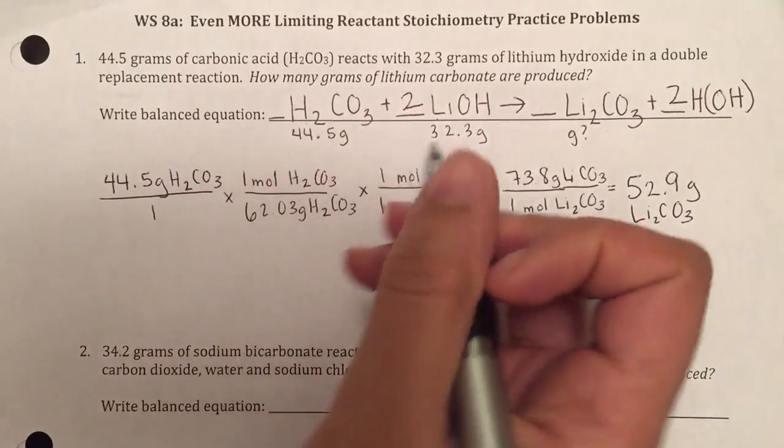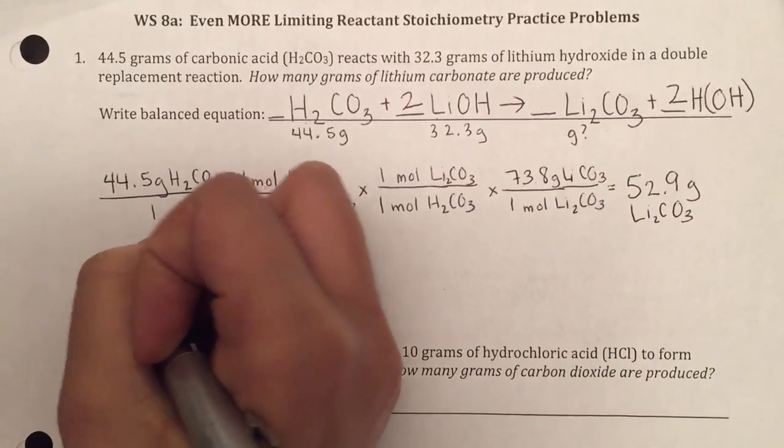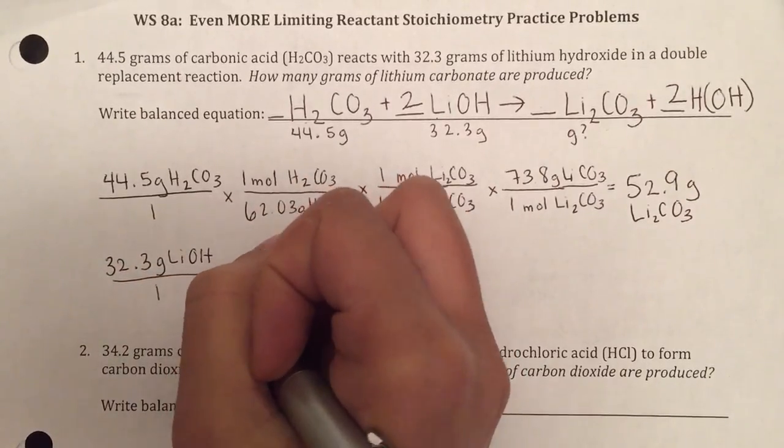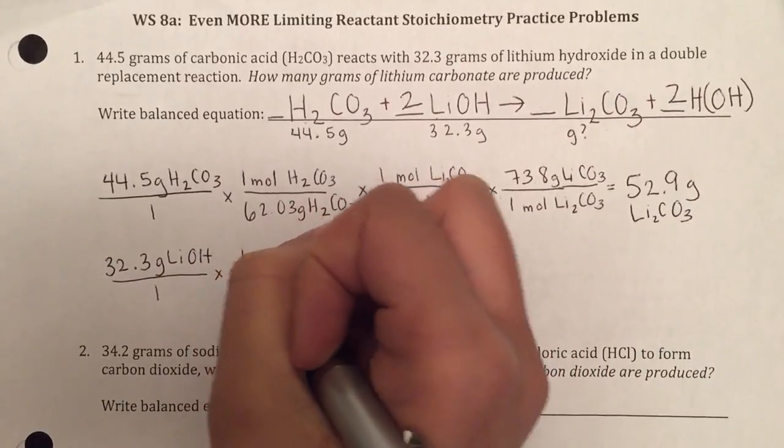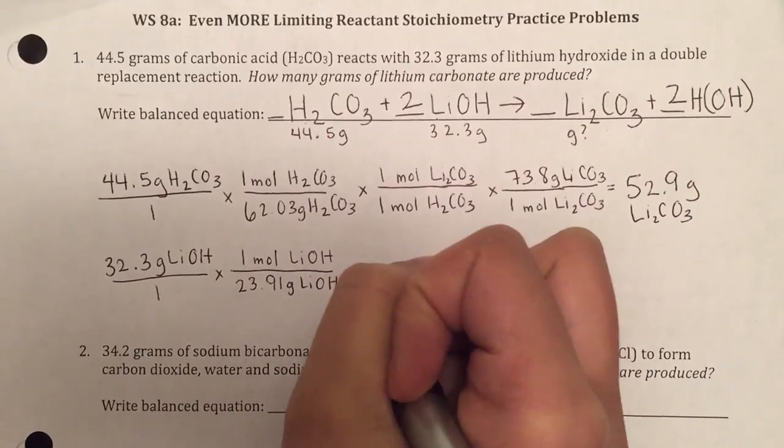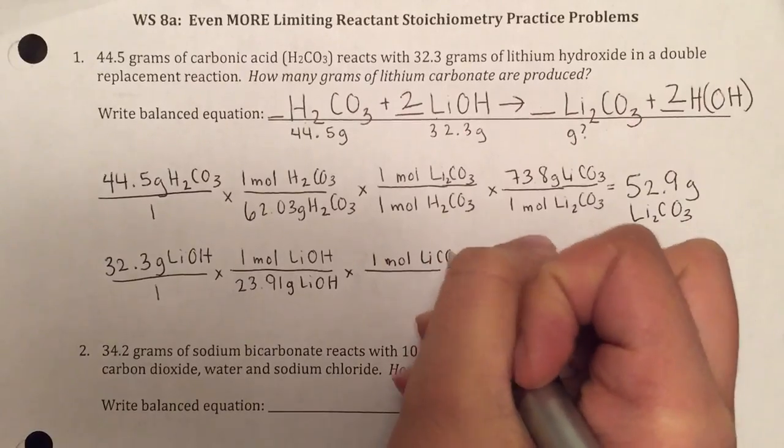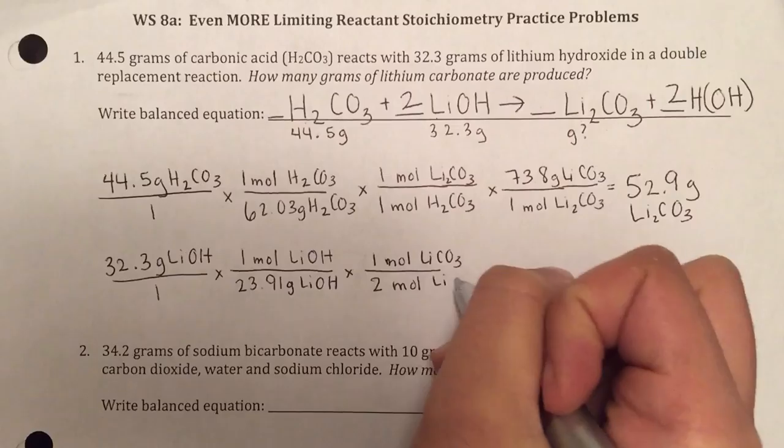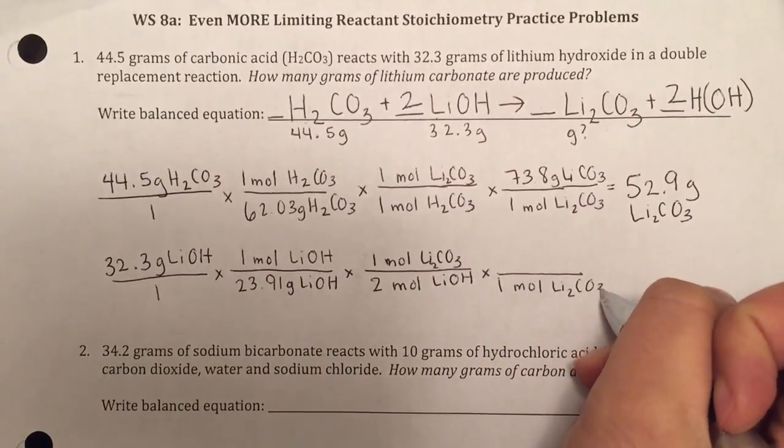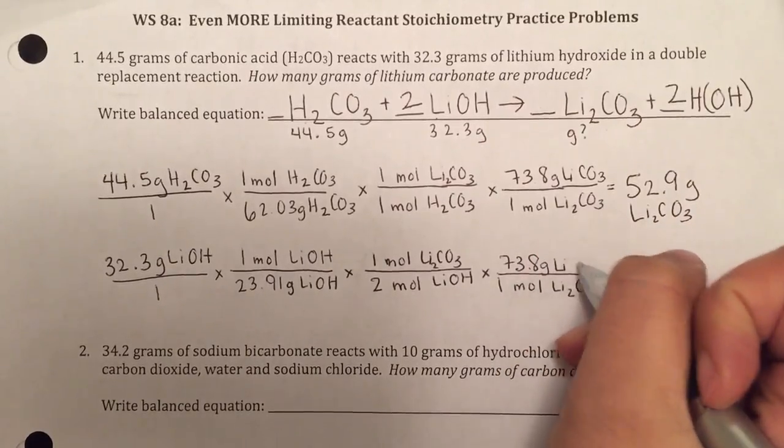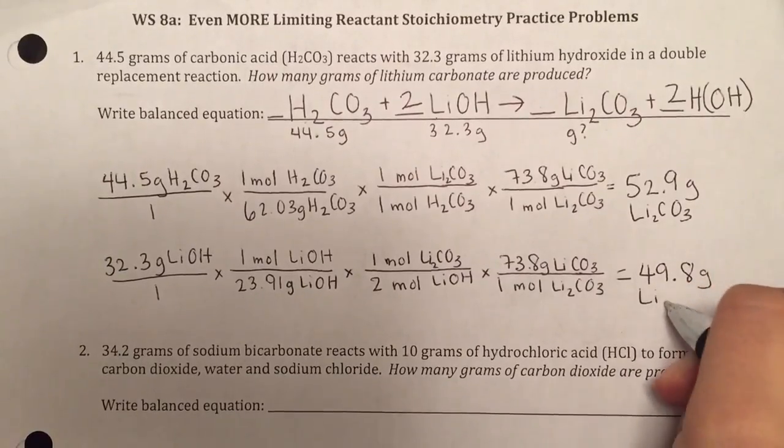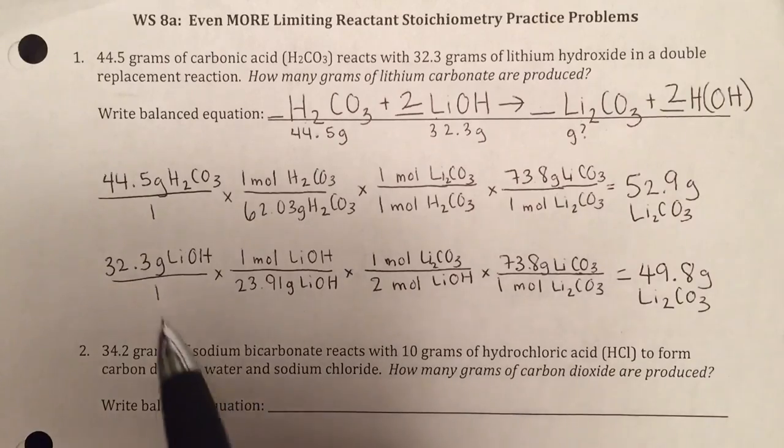Then I'm going to have to see what my other reactant produces. In that case, I have 32.3 grams of lithium hydroxide. I'm going to do the same set of steps. I'm going to convert that into moles, mass from the periodic table. Then I'm going to use my mole ratio. Then I'm going to convert back to grams. If I do that, I find I make 49.8 grams of lithium carbonate.